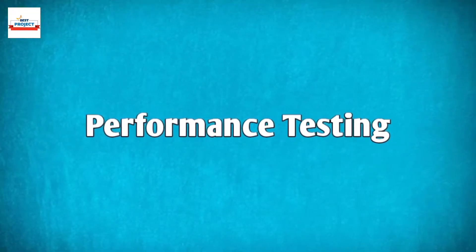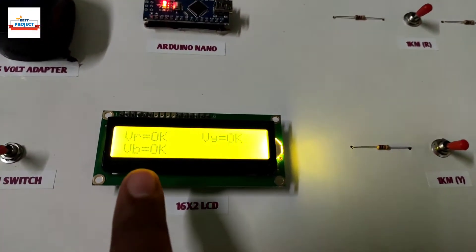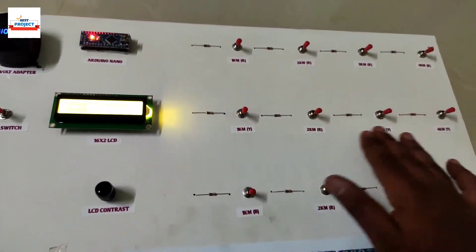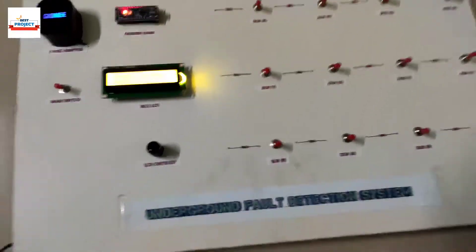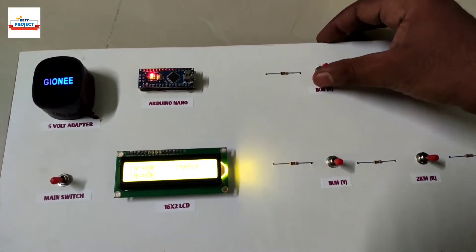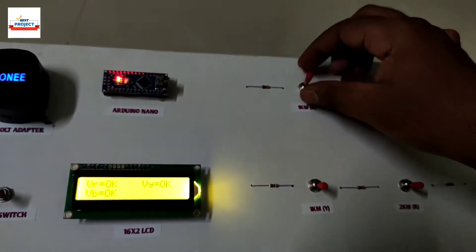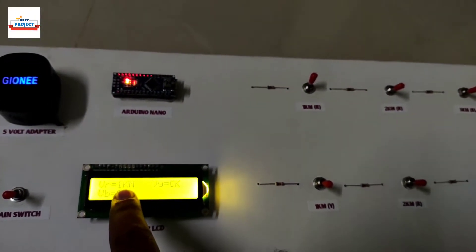Let's test it and see its working performance. As you can see, there is no fault on screen. First test will conduct on R phase. Going to create artificial underground fault at one kilometer using the toggle switch. Fault has been detected by the system so quickly.